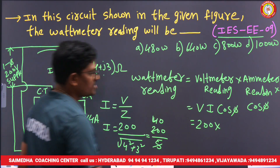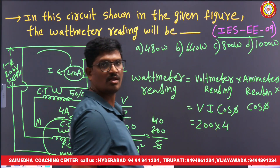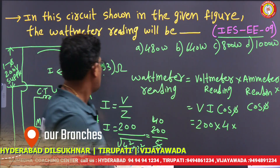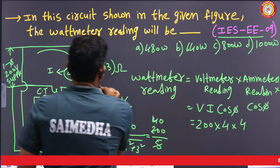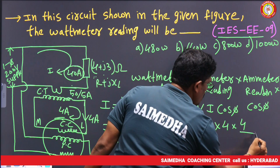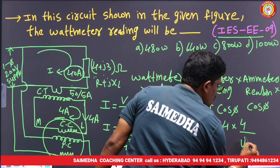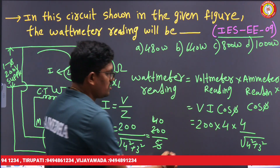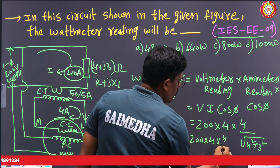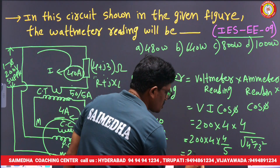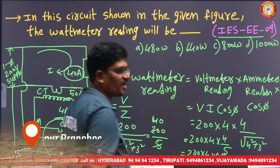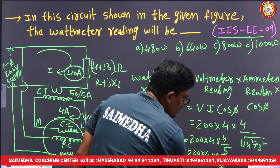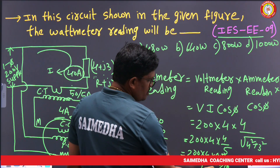So now we write the wattmeter reading formula: V × I_CC × cosφ. The current coil current is 4 A, the supply voltage is 200 V, and cosφ = R/Z = 4/5 = 0.8. So the expression is 200 × 4 × 0.8.